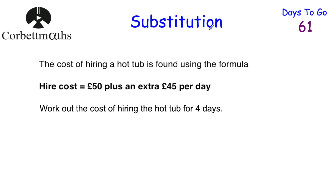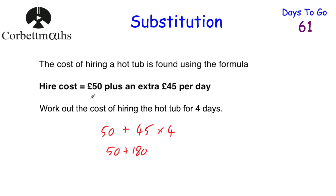Here's one for you to try. The cost of hiring a hot tub is found by the formula: hire cost equals £50 plus £45 per day. Work out the cost of hiring the hot tub for four days. It's £50 plus £45 multiplied by 4. Remember order of operations — multiply first. 4 multiplied by 45 equals 180, then 180 plus 50 equals £230. So it costs £230 to hire the hot tub for four days.